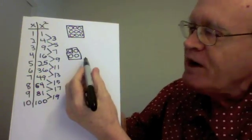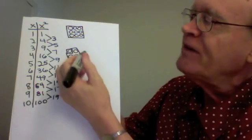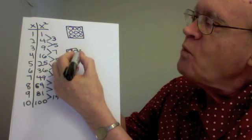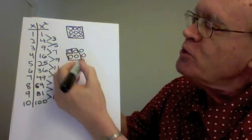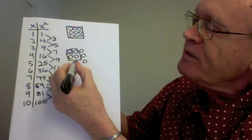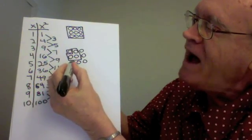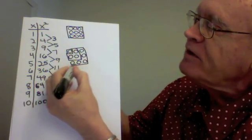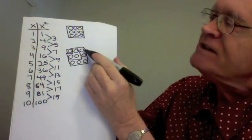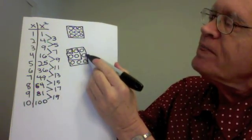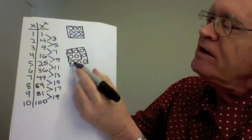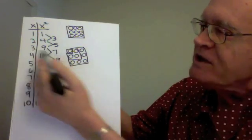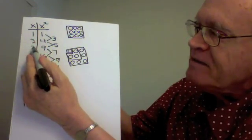And now, to get the next square number, I must add the next L shape, which has to be bigger than this. One, two, three, four, five. Forming the next square number, nine. And that five consists of these two, not including the corner, plus these three, which do include the corner. That's two plus three makes five.